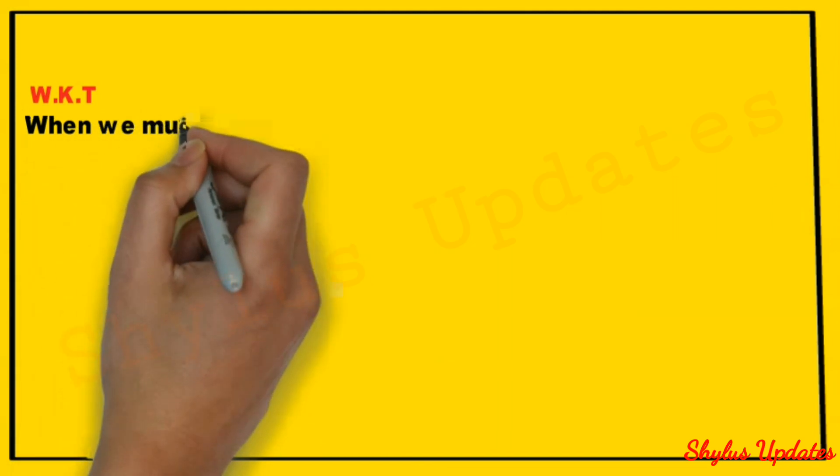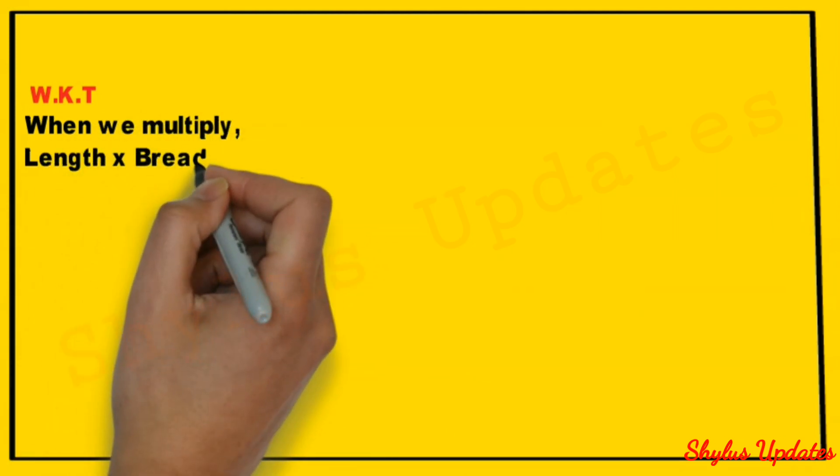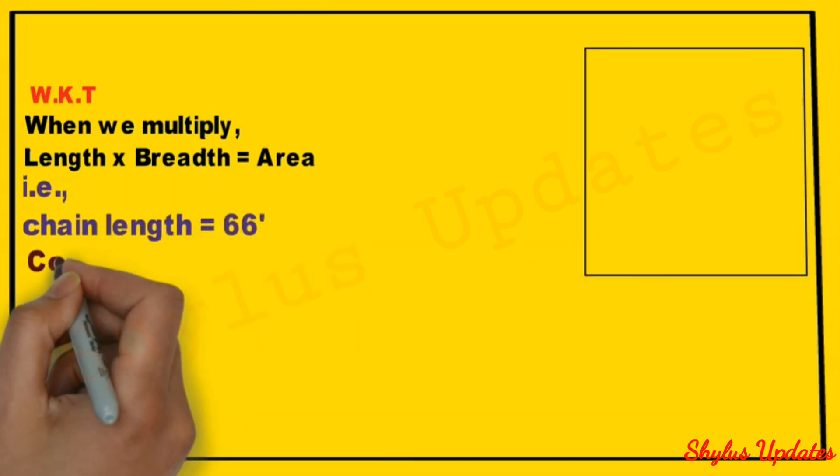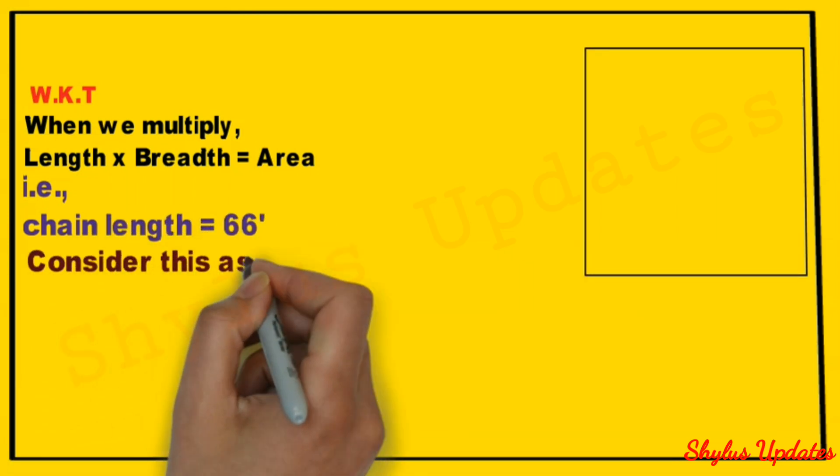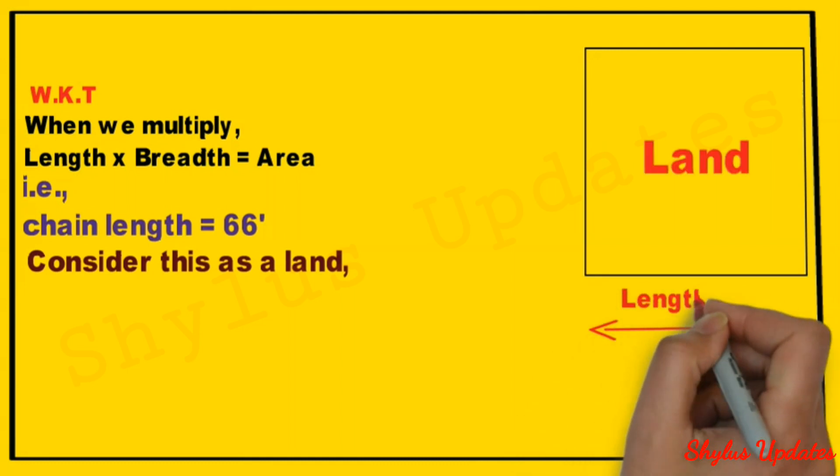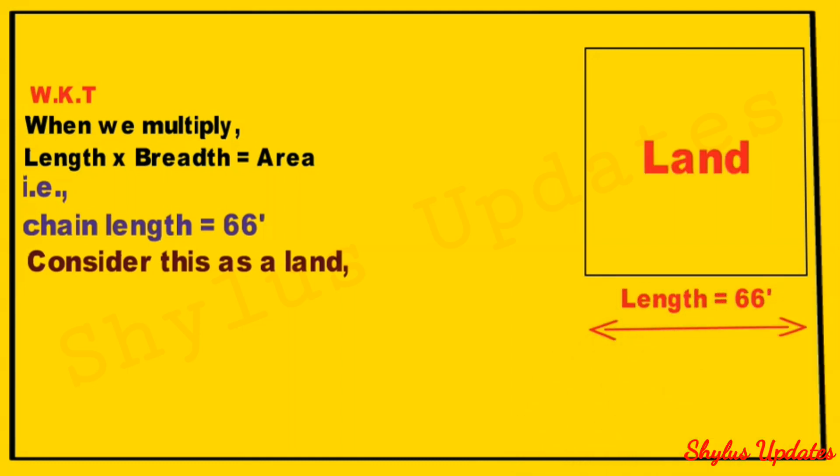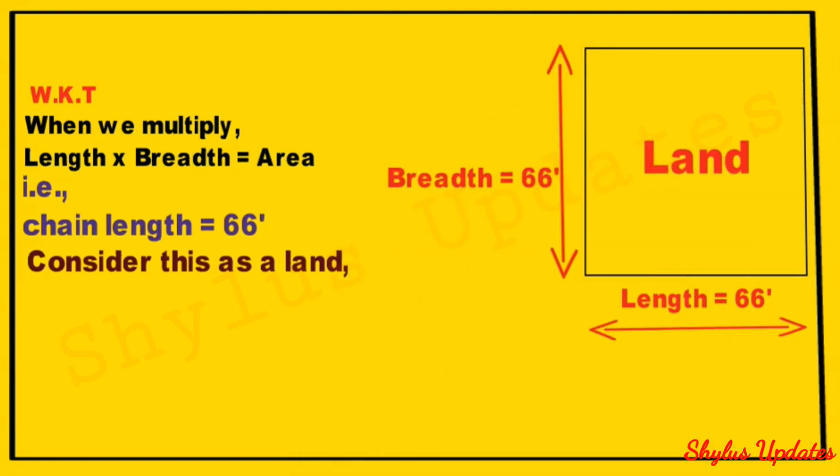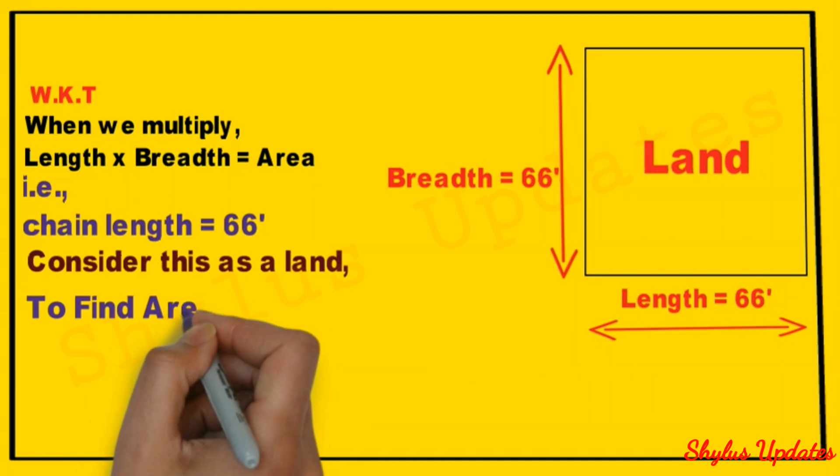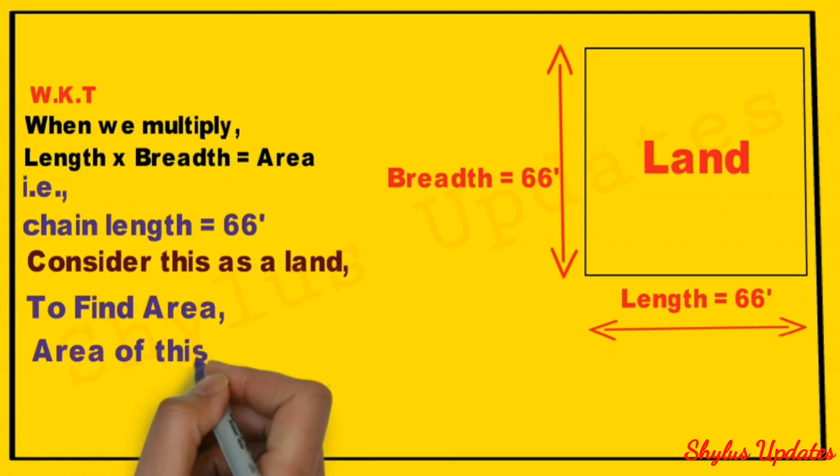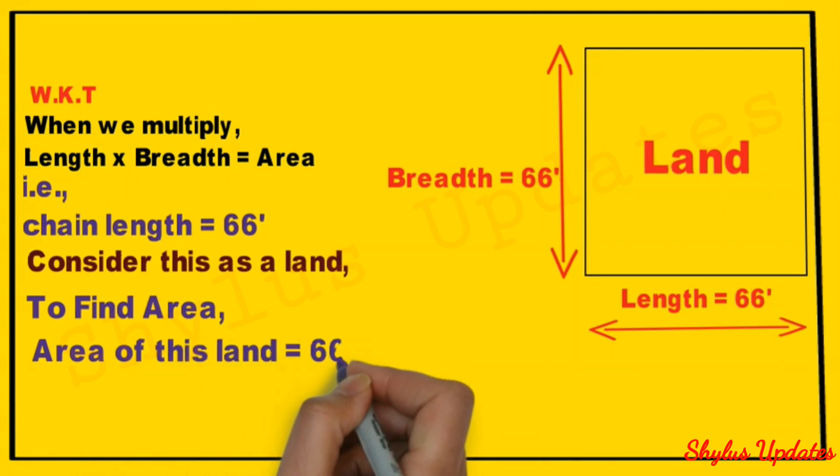We know that when we multiply length into breadth, we get the area. That is, one chain length is 66 feet. Now consider this as a land. Here the land length is 66 feet and the breadth is also 66 feet, that is one chain length. To find area, area of this land is equal to 66 feet into 66 feet, which is equal to